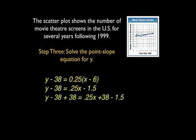Now we're going to get y by itself by adding 38 to each side of the equation so that the minus 38 will cancel itself out. And what we end up with is y minus 38 plus 38 is equal to 0.25x plus 38 minus 1.5. Now we're going to simplify that out and we're going to do the 38 minus 1.5. And that leaves us with y is equal to 0.25x plus 36.5.